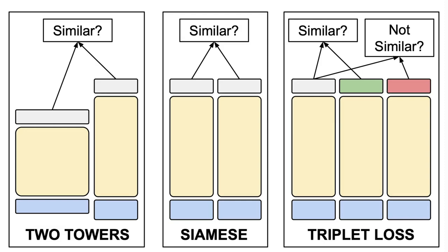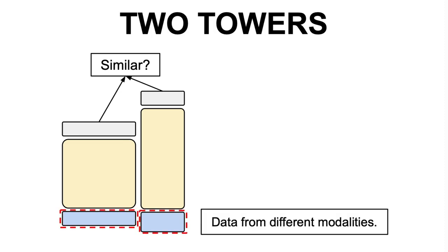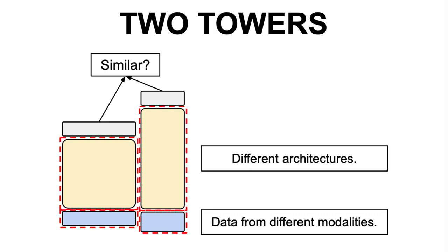These architectures play crucial roles in various applications and are used in general to compute the similarity between two inputs. To start with, the two towers architecture is named for its characteristic structure of connecting embeddings in two distinct modalities and this model is commonly employed when dealing with data that originates from different sources or modalities.